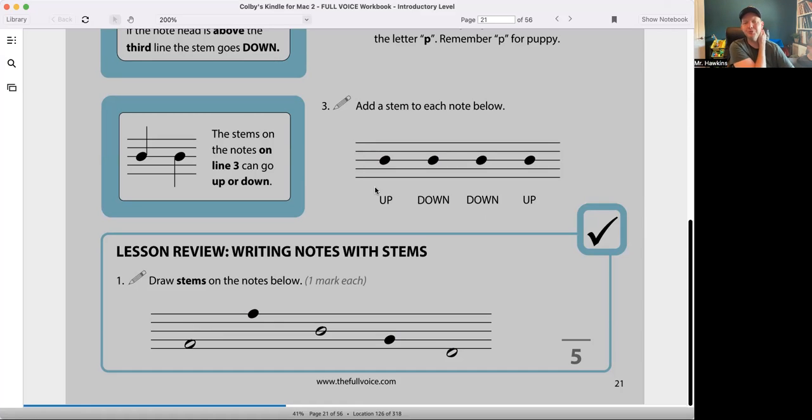Now to review. Draw stems in the notes below. If the notes are really low on the staff, then draw a stem going up. If they're high on the five lines and four spaces, draw a tail going down. If they're in the middle, the third line from the bottom, you can draw it up or down.